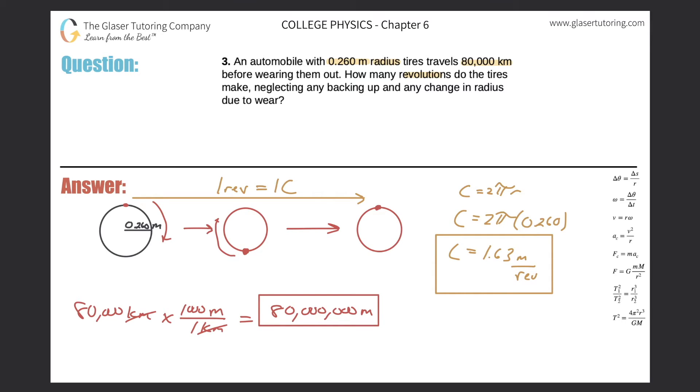Alright, so now, it is asking, how many revolutions do the tires make in its lifetime? Well, if every one revolution, it travels 1.63 meters, and over the whole lifetime of the vehicle, it's going to travel 80 million meters, what do you think the math is going to look like in order to find that out? It's basically a division.